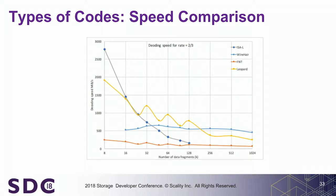What can we say? Our code works for all rates — it's rate-insensitive — with decent performance for encoding. Decoding is much less than LDPC. Leopard, which is an additive FFT, is way beyond us in terms of optimization. This is a work in progress.